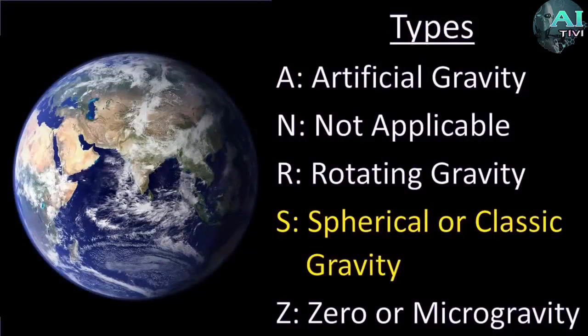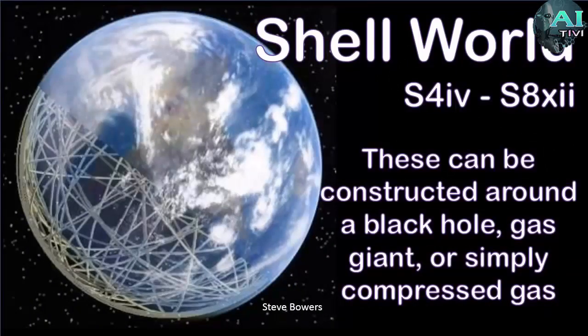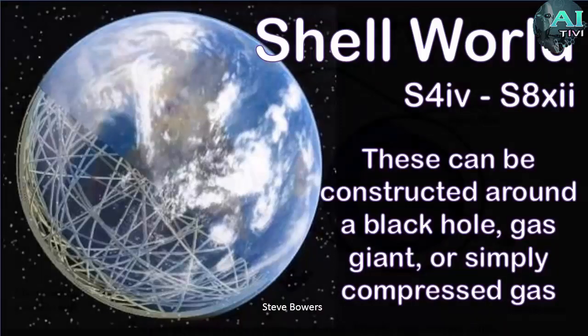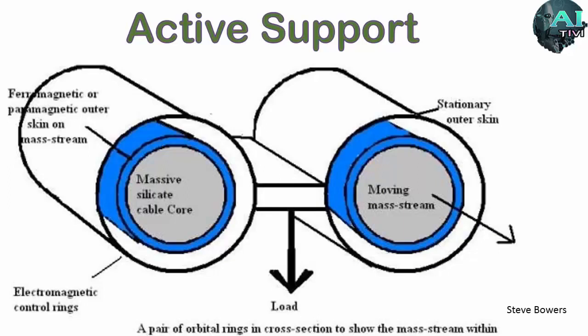Our next major category is spherical gravity, classic gravity. Now this is a much bigger category than you initially think. We're not just talking about large moons, classic planets. We're also including shell worlds. Examples of this would be where you construct the board around a large object like a black hole which could be smaller than a planet or larger because it's an artificial black hole or around a gas giant or even just compressed gas. This isn't strictly limited to super powerful materials that allow you to make a rigid shell the size of multiple planets.